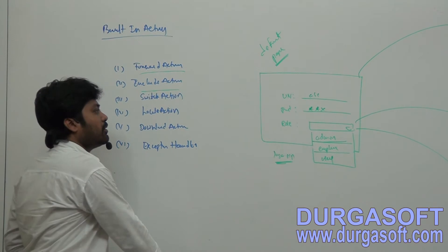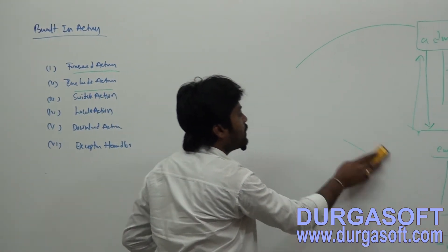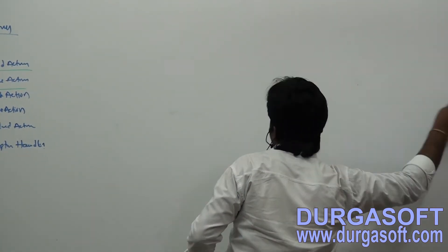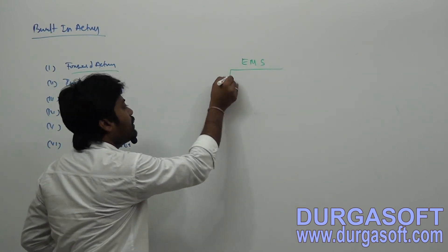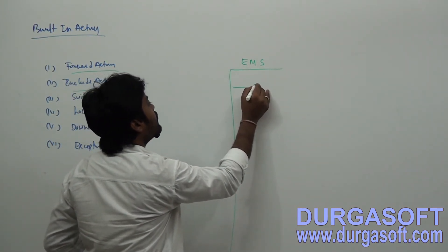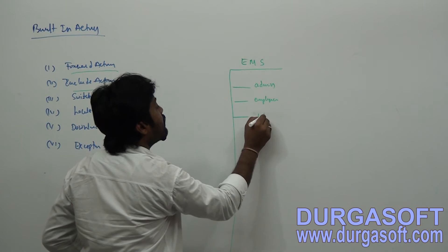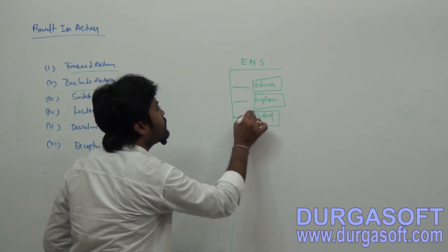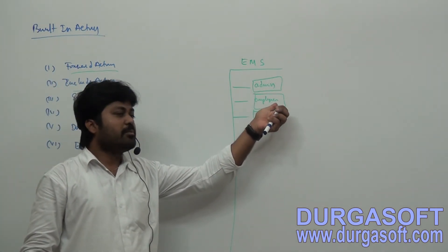To use multiple modules, consider an Employee Management System (EMS) application with three modules: admin, employee, and user. You would have three view resource folders — admin folder, employee folder, and user folder — and only one WEB-INF directory.